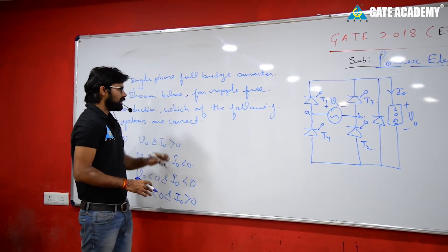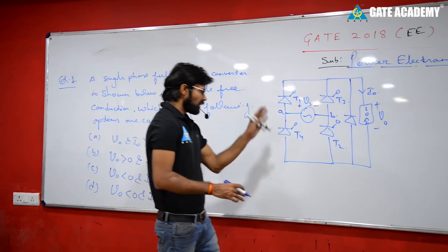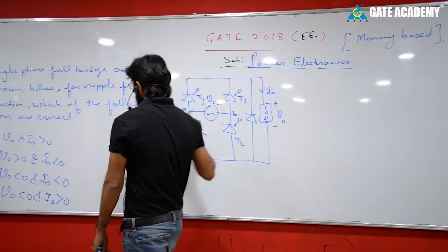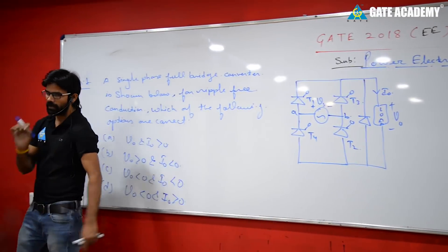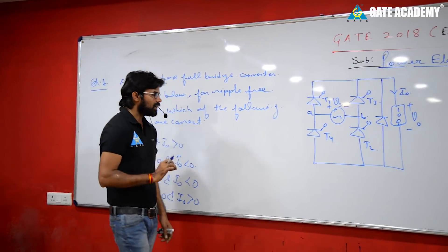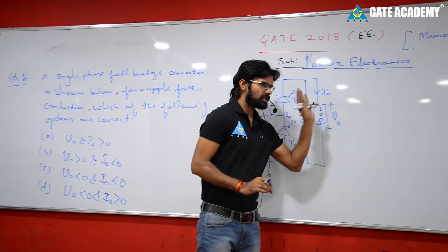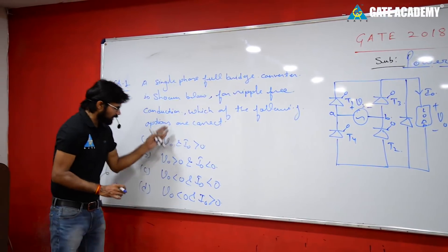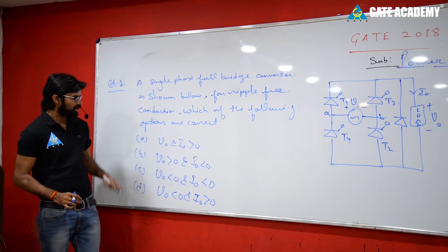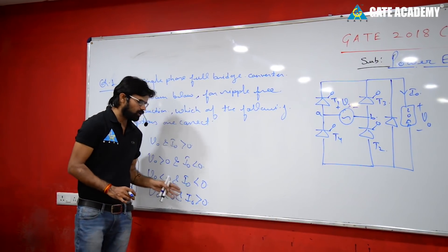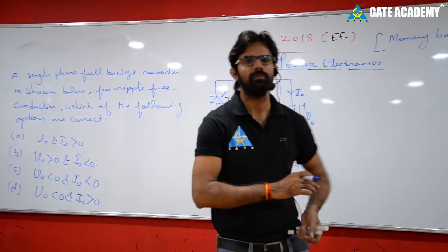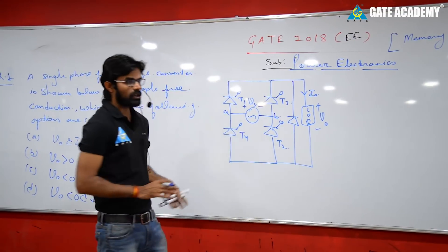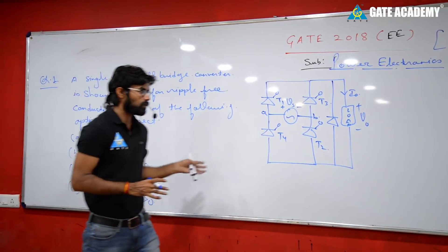You have to tell me: this circuit is a single-phase full converter with a freewheeling diode. Given that ripple-free conduction is required, you have to determine which values of V0 and I0 will be greater than zero.